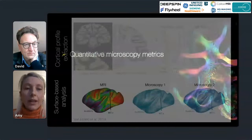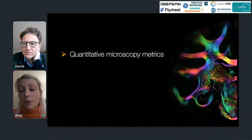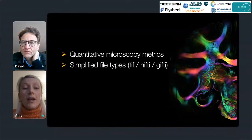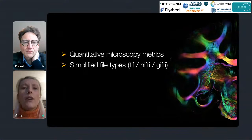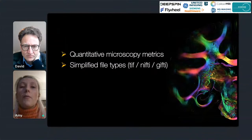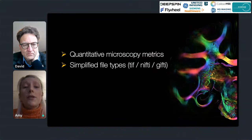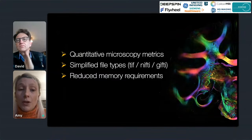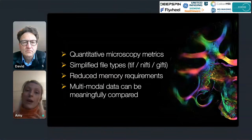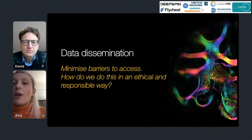Data curation is a really important part of sharing data. Through this curation we can extract quantitative microscopy metrics and simplify file types — histology files come in vendor-specific format and a single slide can be up to 10 gigabytes. By doing the heavy lifting to extract quantitative metrics, we can down-sample the data sensibly and provide it to end users in TIFF, NIfTI, or GIfTI formats, which are much more accessible. This also reduces memory requirements for data sharing and maps all data into spaces where MRI and microscopy can be meaningfully compared.